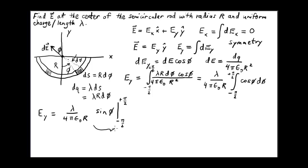So now, e sub y, we have lambda over 4 pi epsilon zero r times the sine of the angle phi from negative pi over 2 to positive pi over 2. And this expression here, when we evaluate it, will give us 1 minus a negative 1 or 2. And so, we get simply 2 lambda over 4 pi epsilon zero r or lambda over 2 pi epsilon zero r. Just for completeness, if we want to find the field, we should write down the vector form, which is just lambda over 2 pi epsilon zero r in the y-hat direction.